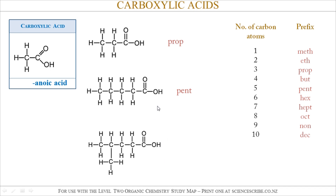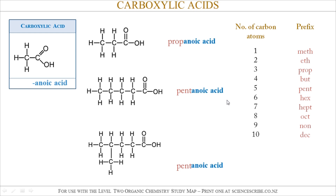In this last example, I look for the longest chain that contains the carboxylic acid functional group, just like the previous two examples, so that is still 'pent.' Now, all carboxylic acids have the ending 'anoic acid,' so my first example is propanoic acid, my second example is pentanoic acid, and my last example is also pentanoic acid.